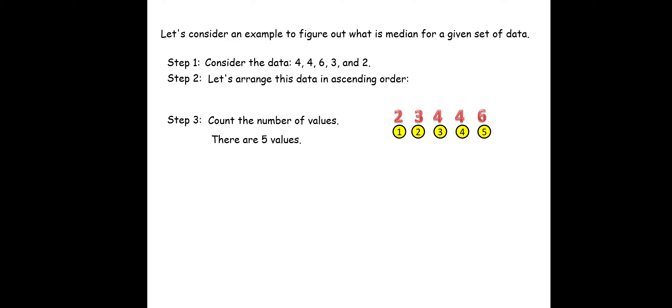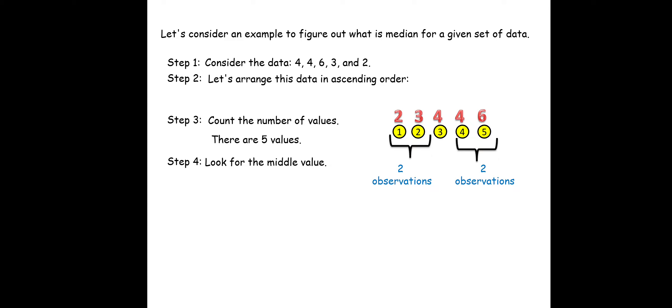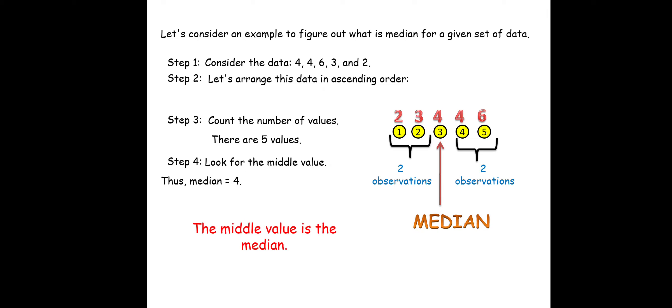There are 5 values. The next step is to look for the middle value. Here we have 2 observations on each side, and whatever is in the middle is the median. So median is equal to 4. The middle value is the median. This is how we calculate median.